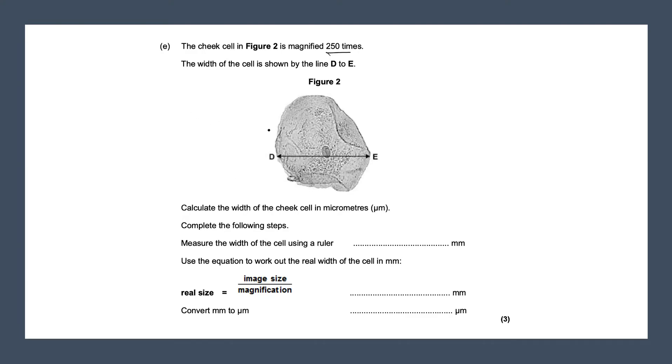I've got it measured over here. This line over here is 45 millimeters. But you would just use a ruler to measure that line. Use the equation to work out the real width of the cell in millimeters. So in millimeters again.